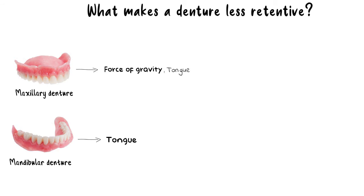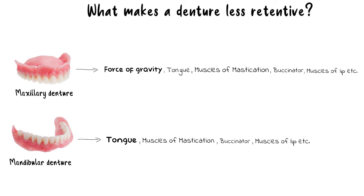Forces from other places, like the forces from the muscles of mastication, the muscles of the cheek which is the buccinator muscle, and the muscle of the lip which is the orbicularis oris muscle, are less of a problem to encounter but can still cause problems of dislodgement in both dentures and hence should always be considered while taking impressions, along with other intraoral forces as well.